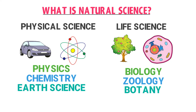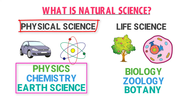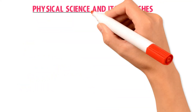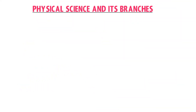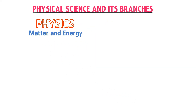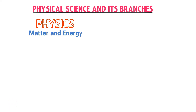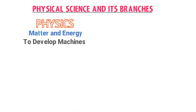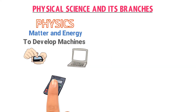First, I will discuss the branches of physical science, then the branches of life science. The first and most important branch of physical science is physics. In physics, we study about matter, energy, and their mutual relationship. For example, physics teaches us the information and methods to develop useful machines like cell phones, computers, calculators, cars, and airplanes.